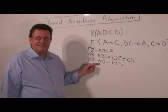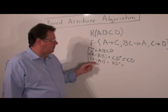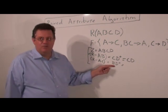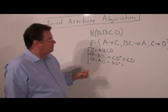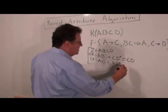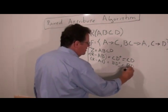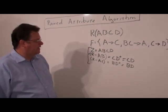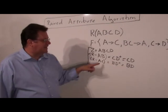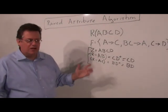We take the next pair AC, and we do R minus AC, which is BD. We take the closure and BD closure is BD. That does not contain the AC. We're okay.